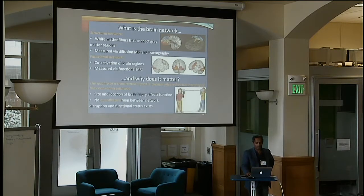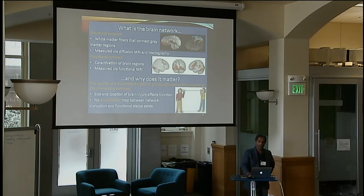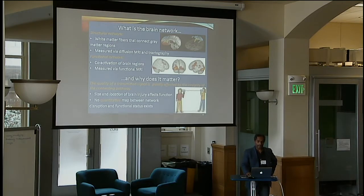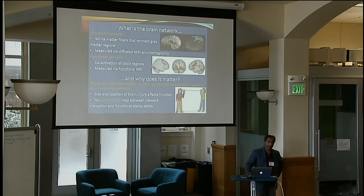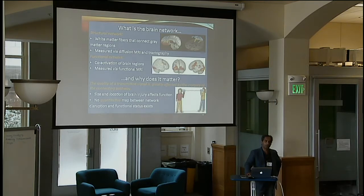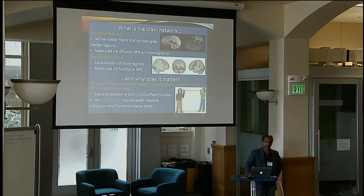What is a brain network? We usually talk about two types. Structural networks are basically the white matter fibers connecting various parts of the gray matter. Functional networks are basically statistical artifacts where you look at signals coming from different parts of the brain, and their co-occurrence or correlation gives you a sense that those two regions must be functionally connected if they're activating together.